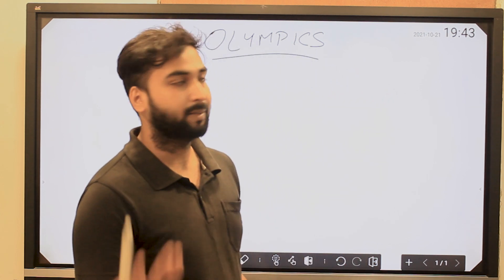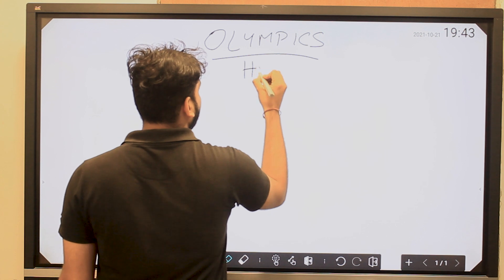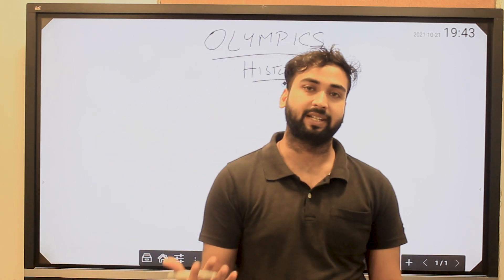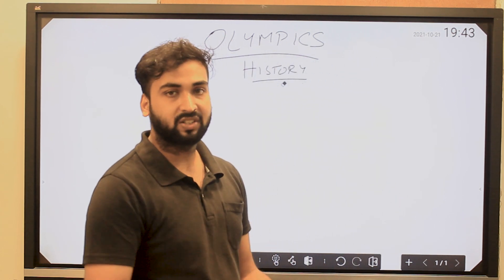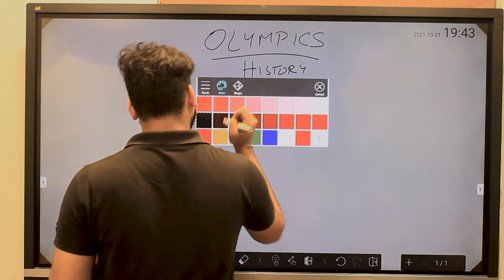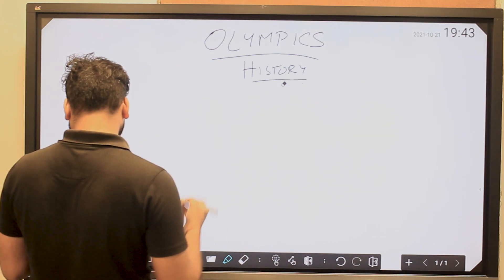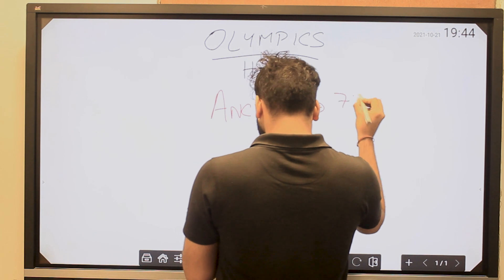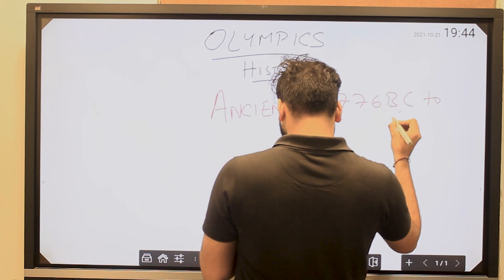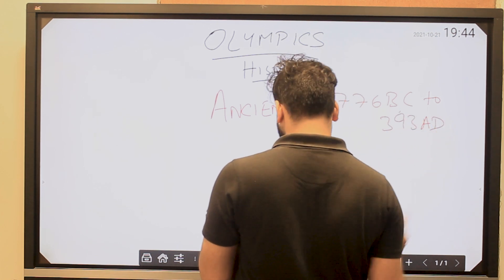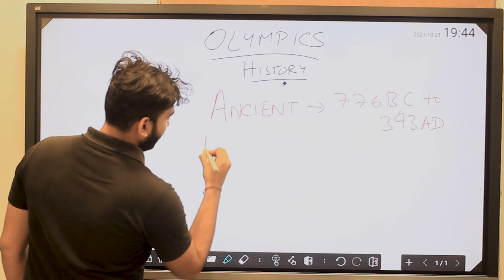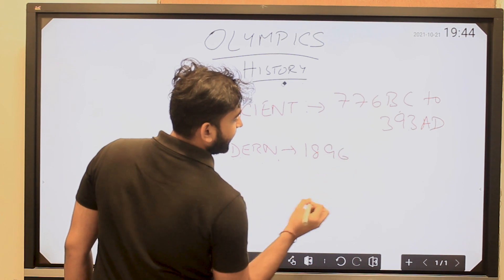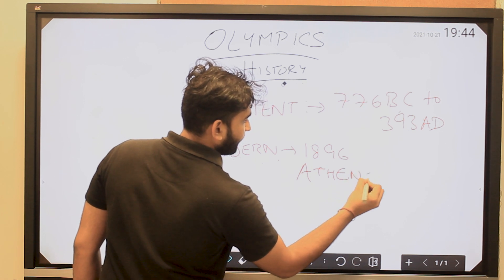We start with the Olympics, and the first important thing is the history of the Games. The modern Olympics we have today originated from the ancient Olympics. The ancient Olympics were held in Greece from 776 BC to 393 AD. The first modern Olympics started in 1896 in Athens, Greece.